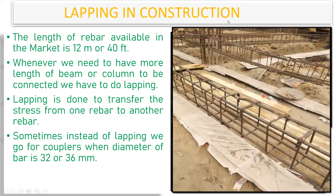Just as I showed lapping for columns, in beams we also do lapping. You can observe here: one bar ends and another bar overlaps it. That overlapping length — from here to here — is called the lap length. You can identify similar lapping at multiple locations in the beam.